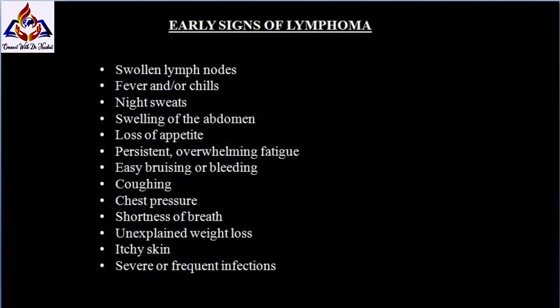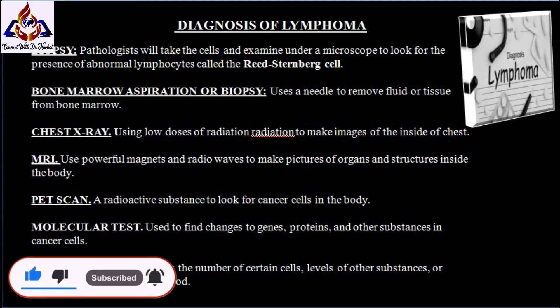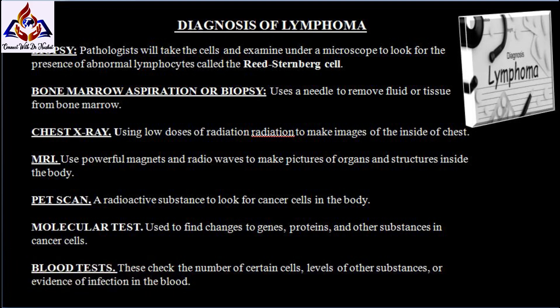Skin biopsy is a common diagnostic test for Hodgkin lymphoma. A pathologist will take cells and examine them under a microscope to look for the presence of abnormal lymphocytes called the Reed-Sternberg cell, or RS cell. Another test is bone marrow aspiration or biopsy, where a doctor uses a needle to remove fluid or tissue from the bone marrow — the spongy part inside bone where blood cells are made — to look for lymphoma cells.